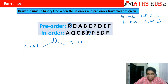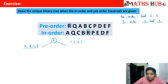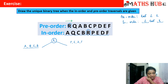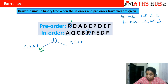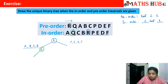Now we move on to the next sub-problem: out of A, Q, C, and B, which is the next root? Go to the pre-order traversal and scan left to right to see which of these vertices appears first in the sequence. After R, Q appears first among those vertices. So Q becomes the next root. Since Q is the root, we go back to in-order: towards the left of Q we have vertex A only, and on the right of Q we have vertices C and B.